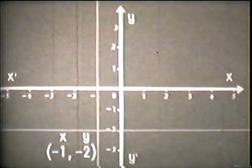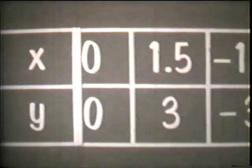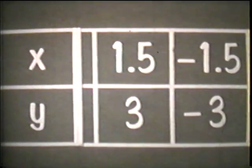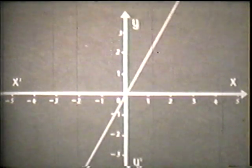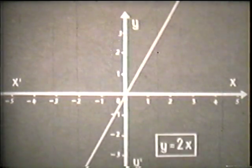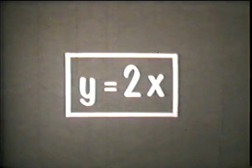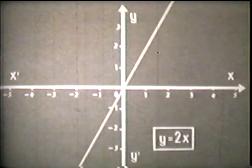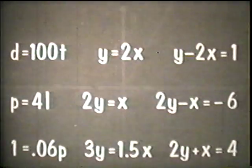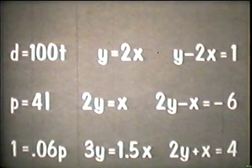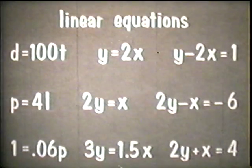In a similar way, we can graph the many other ordered pairs of numbers that satisfy the relationship between the two variables. If we continue adding points, we will form the graph of our equation y equals 2x. The graph shows a linear relationship. Linear relationships exist in all first-degree equations having two variables, and such equations are called linear equations.